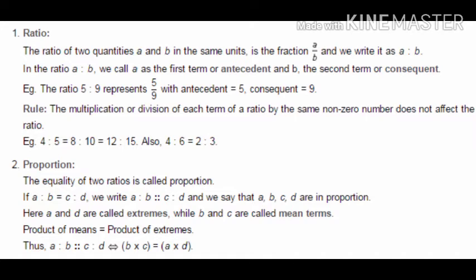For example, in 5/9, the number 5 is the antecedent and 9 is the consequent. The two properties of ratio are: if we multiply or divide both the numerator and denominator by the same value, the ratio does not change and remains the same.